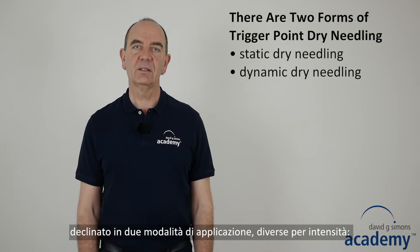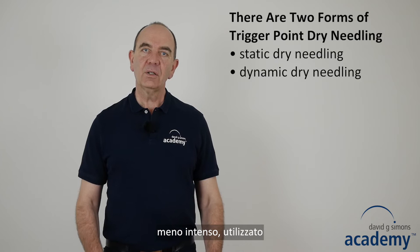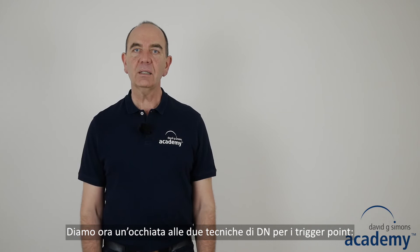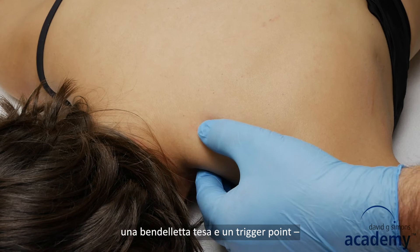Trigger point dry needling is basically done in two different intensities: static dry needling, which is less intensive and used for so-called strong responders, and dynamic dry needling, which is more intensive and used for weak responders. Let's have a look at the techniques of trigger point dry needling.